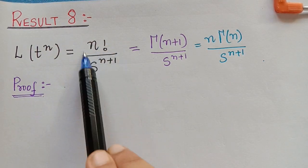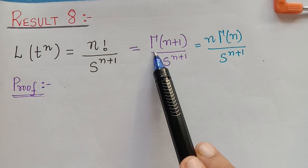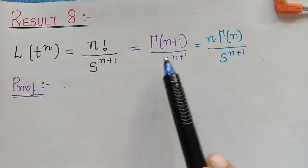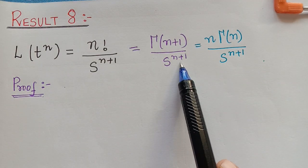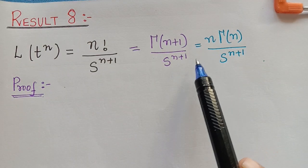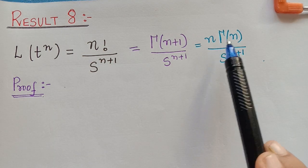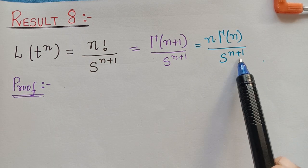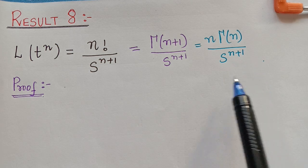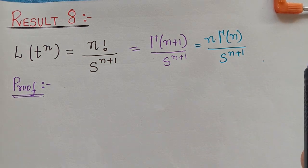This result can also be expressed as gamma of n plus 1 divided by s to the power n plus 1, or it can also be expressed as n gamma n divided by s to the power n plus 1, according to the requirement of the problem.